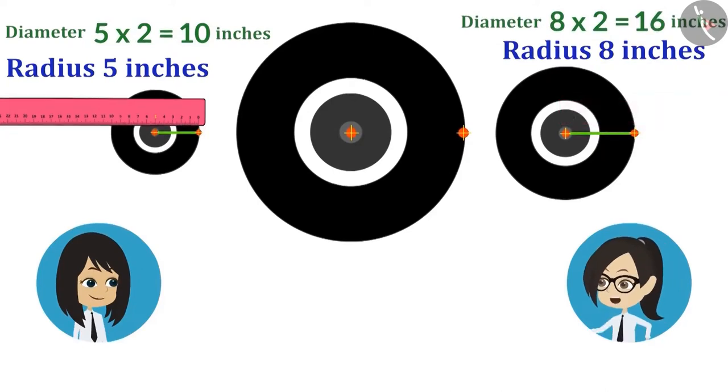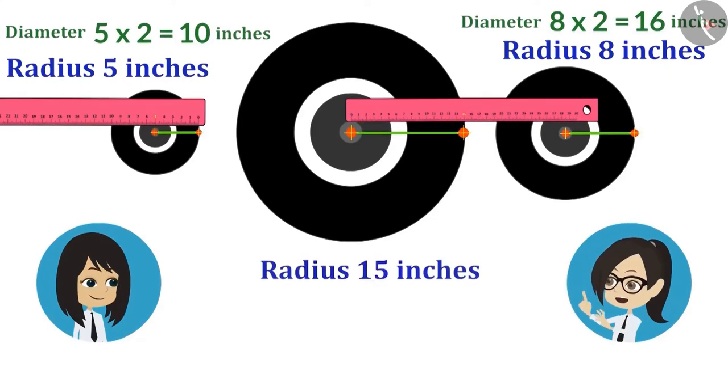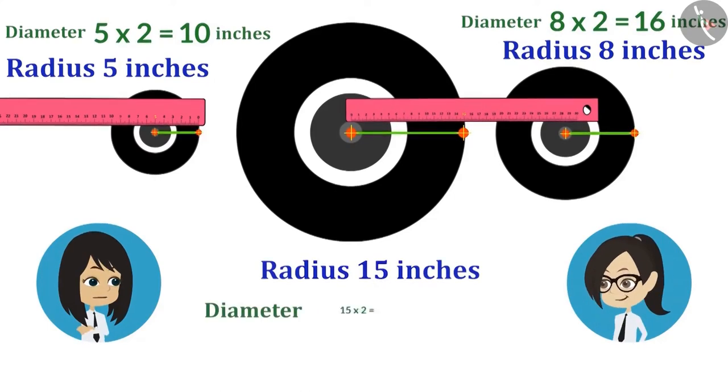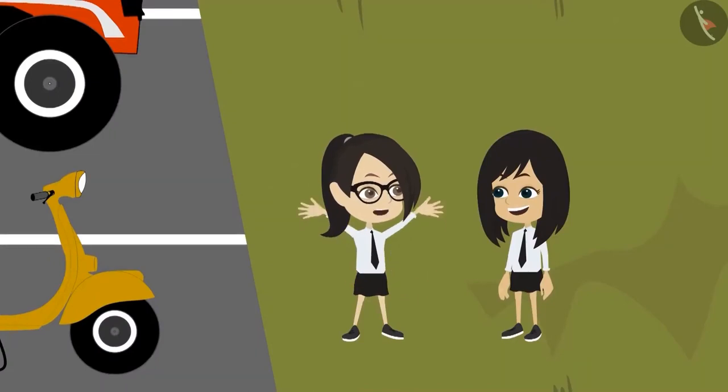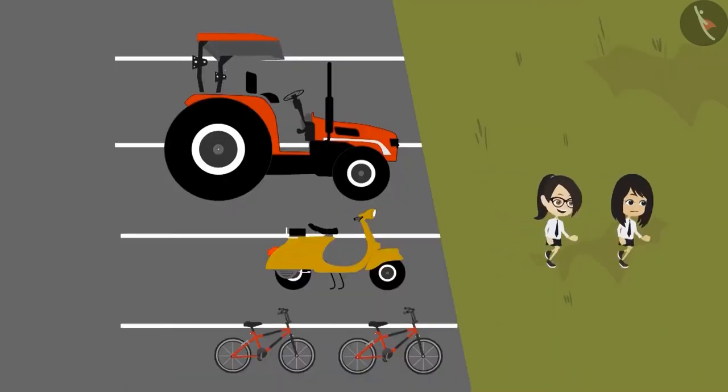And now it's the turn of the largest wheel of the tractor. Its radius is 15 inches. This means its diameter is 30 inches. We took the measurement of all the wheels and now let us tell sir. Let's go.